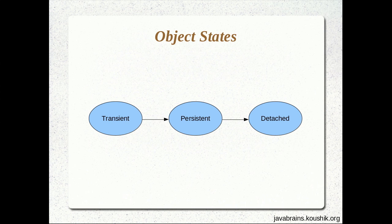A couple of tutorials back, we looked at CRUD operations using Hibernate — create, read, update, and delete operations being done using objects and the Hibernate APIs. What was happening behind the scenes was that our entity objects were actually going through all these different states. So what we're going to do now is look at how the states change from one state to another as we perform these different operations, so that we'll have a better understanding of these three states.